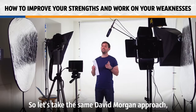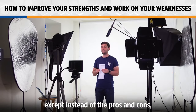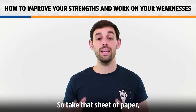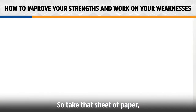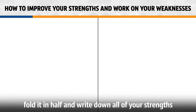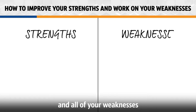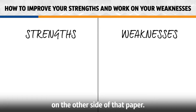So let's take this same David Morgan approach, except instead of the pros and cons, we will list out strengths and weaknesses. So take that sheet of paper, fold it in half, and write down all of your strengths on one side and all of your weaknesses on the other side.